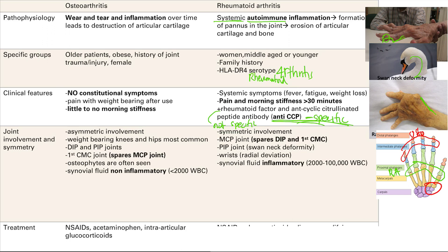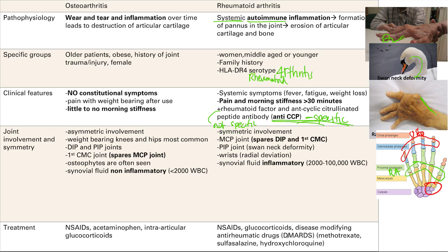For synovial fluid in rheumatoid arthritis, it's inflammatory — meaning increased white blood cells, between 2,000 and 100,000, which is a useful differentiating factor from osteoarthritis. Treatment includes NSAIDs and glucocorticoids for pain and acute inflammation reduction. But because this is systemic autoimmune inflammation, you can also give disease-modifying anti-rheumatic drugs (DMARDs) — systemic autoimmune anti-inflammatory medications such as methotrexate, sulfasalazine, and hydroxychloroquine.